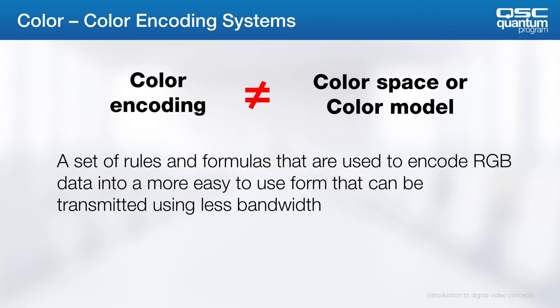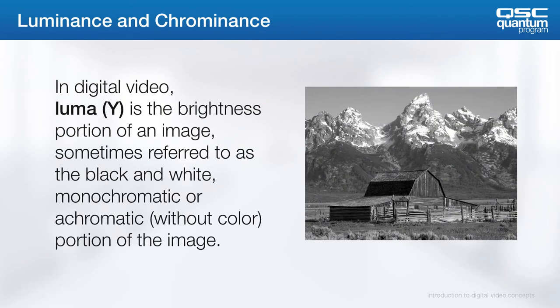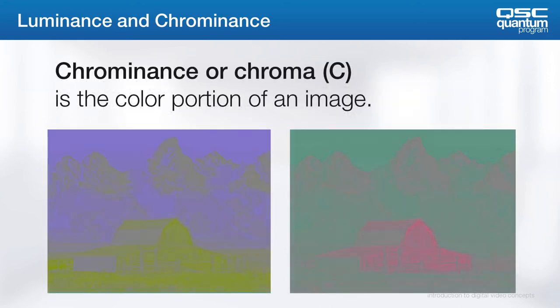Don't get color space confused with color encoding. Color encoding systems are defined as sets of rules used to encode RGB data into a more easy-to-use form that can be transmitted using less bandwidth. Using the YCbCr encoding system, the luma, or Y, is the brightness portion of the image — sometimes referred to as the black and white or monochromatic portion. Chroma, or C, is the color portion of the image. Transforming an RGB signal into luma and chrominance components has many useful properties. RGB signals carry redundant data, one reason being that luminance is carried over all three RGB components. Transforming to YCbCr is performed via a mathematical transform which is 100% recoverable when transforming back to RGB.